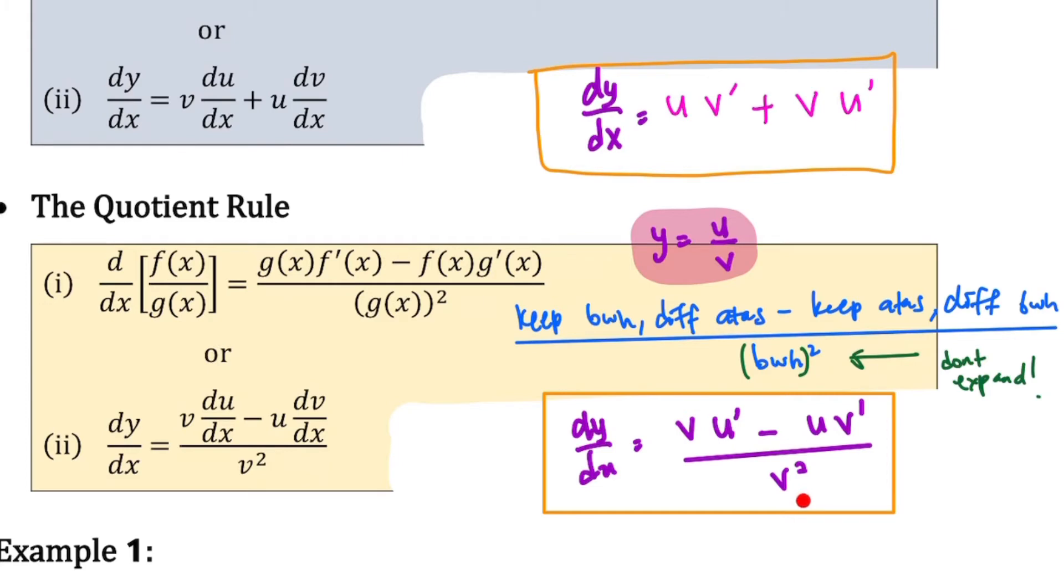So how do you get this? The rhythm is: keep the bottom part (v), differentiate the upper part (u'), minus keep the upper part (u), differentiate the bottom part (v'), over v squared. Okay, the bottom part you square.